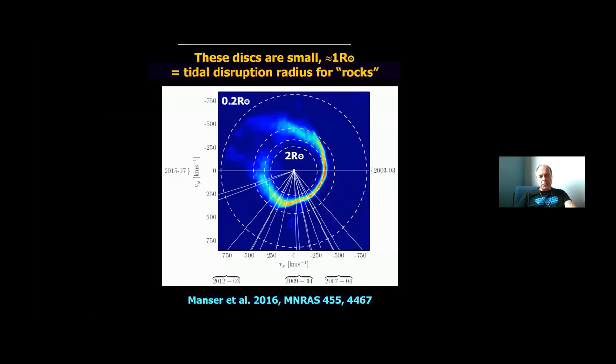For the prototypical system, we were able to create a Doppler image. So this is a real image of the disk. It is in velocity coordinates. So it's a little bit confusing because the outer edge is inside and the inner edge is outside. But the main point to take away is that these disks are small, roughly one solar radius in size. And that's what we would expect because that's the tidal disruption radius for rocky bodies when they get too close to a white dwarf.